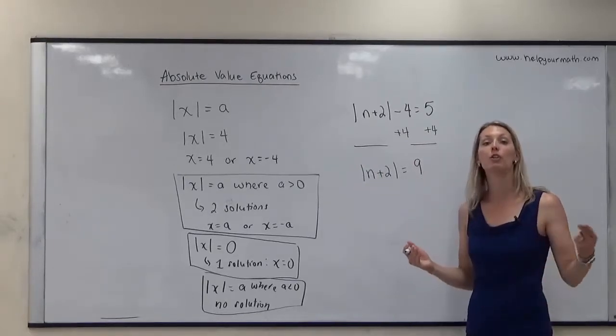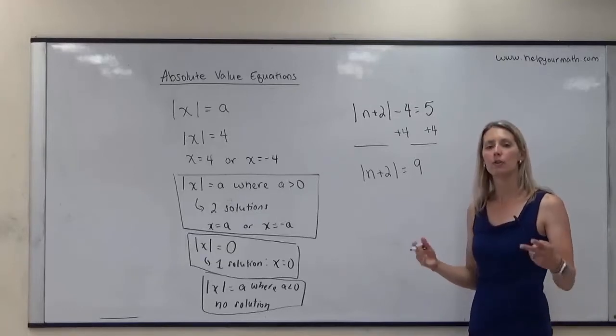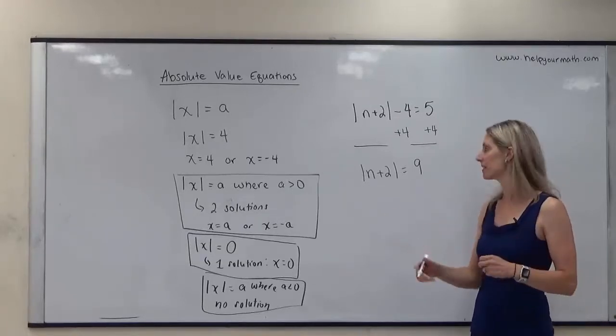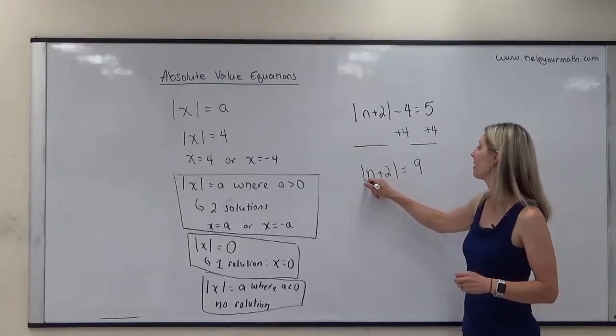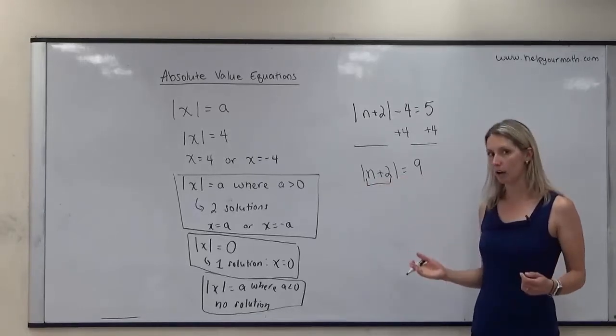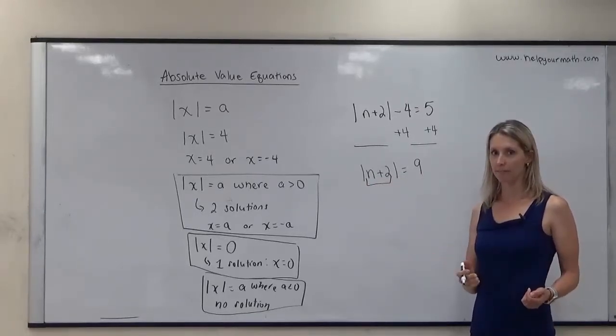Now the absolute value is isolated and equals something positive, so we can determine there will be two solutions. Those two solutions come from setting the inside equal to 9 or to negative 9.